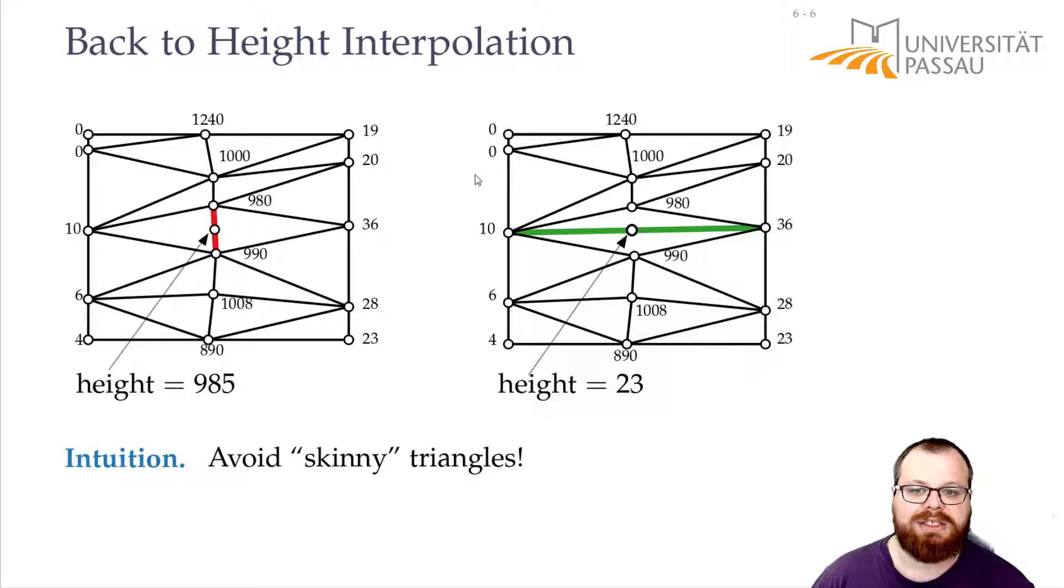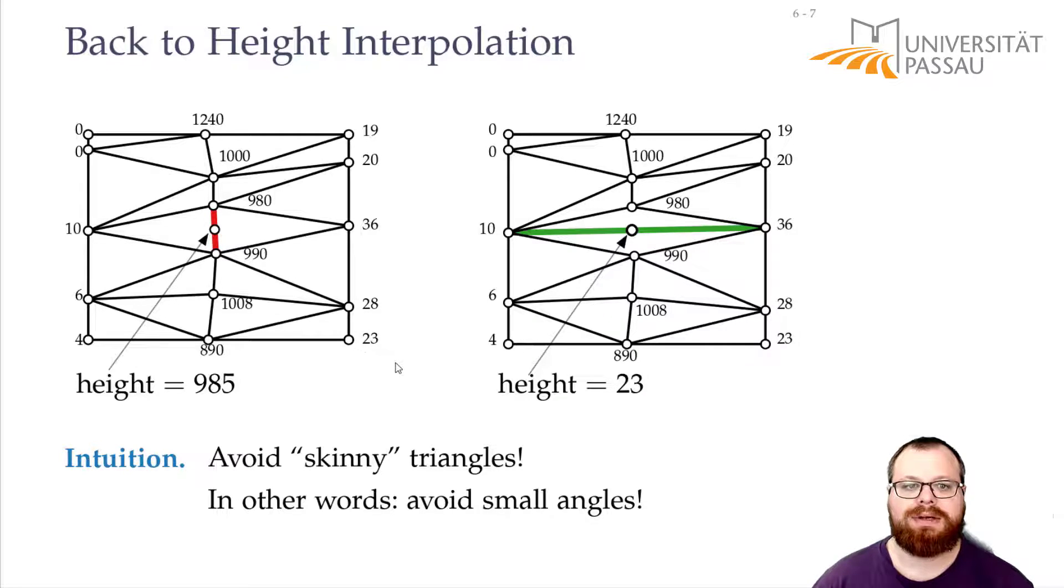And how do we measure how skinny a triangle is? That we can do by looking at the angles. Here we have very small angles, and here we have larger ones. So we want to find triangulation that is angle optimal, where the angles are as large as possible.